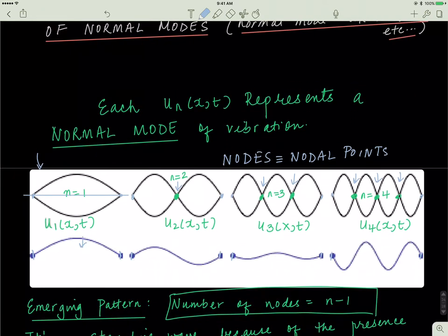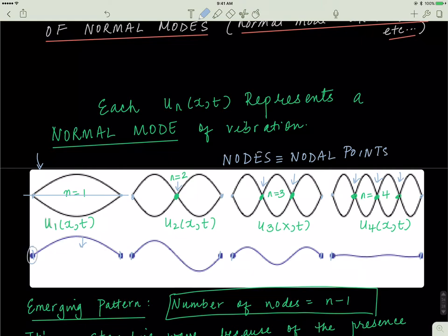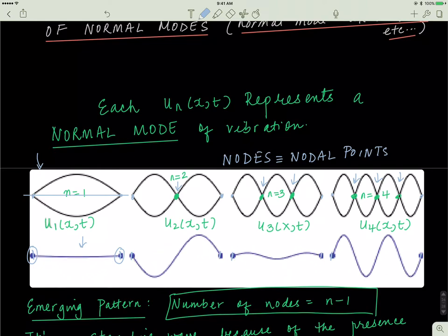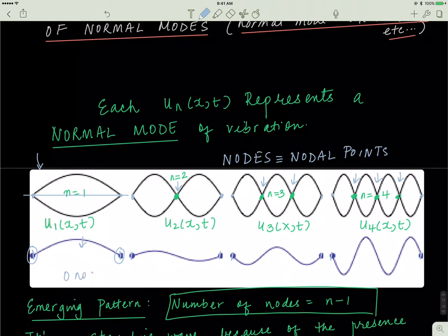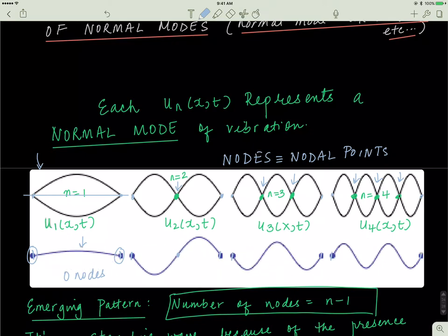They don't have any net movement. So the important question is, what pattern do you see in reference to nodes? When n is equal to 1, I don't have any nodes. I just have 2 boundaries, but that's not a node. That's just where I tie the string down. So when n is equal to 1, I have 0 nodes. When n is equal to 2, I have 1 node somewhere over here.